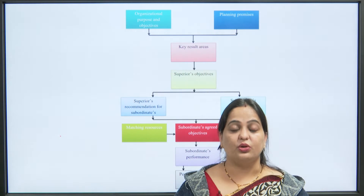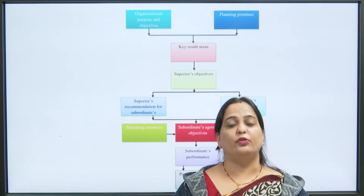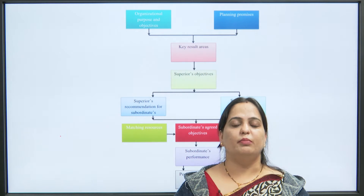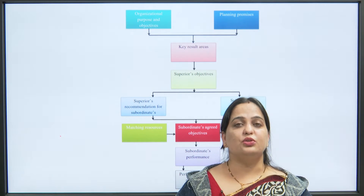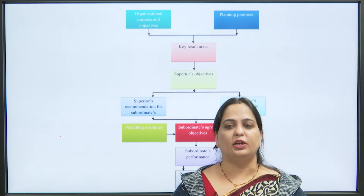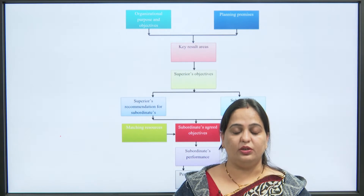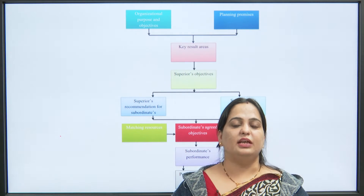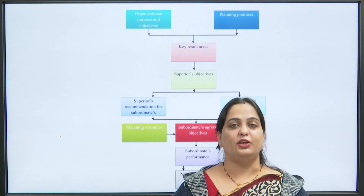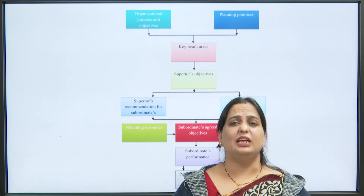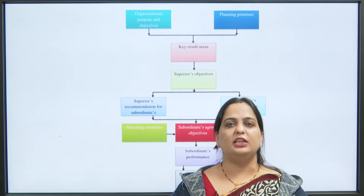Step 4 is matching resources. When the objectives are set with the help of employees, the resources — men, material, machine, money, method, and market — should be matched with the objectives. When resources are matched with objectives, operations become effective and efficient. Step 5 is performance review and feedback, which helps identify areas where things are not working. Timely corrections and feedback allow managers to tell employees what is expected and help them with any problems they face.